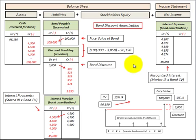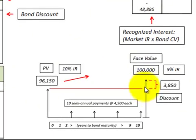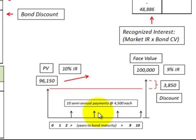Here I'm going to show you how to record a bond issued at a discount on the balance sheet with its journal entries. With a bond we have two cash flows to be concerned with. First would be its face value or principal amount that has to be paid at maturity, and then the interest payments on that bond. Usually they're semiannual payments and they're based on the stated rate of interest on the bond.